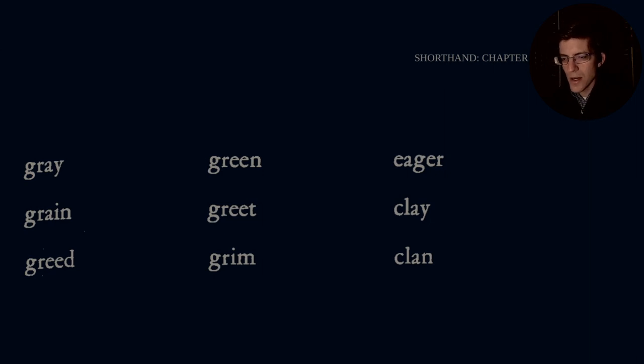We have these words right here. Gray, grain, greed, green, greet, grim, eager, clay, and clan. So let's go ahead and start writing that out. Gray. Remember, longer stroke for G, er, A. And then grain, G, er, A, N. Greed, G, er, E, D. Remember the stroke goes on the inside. Green, G, er, E, N. Greet, G, R, E, T. That could be cleaned up just a little bit.